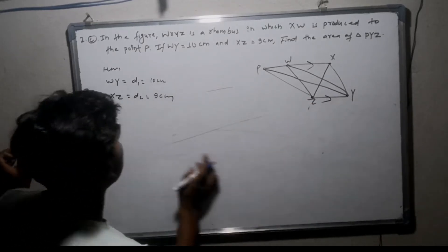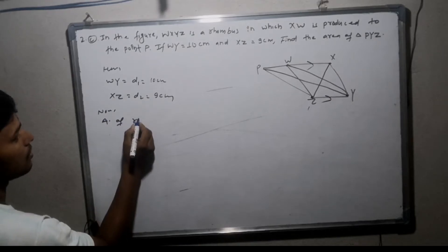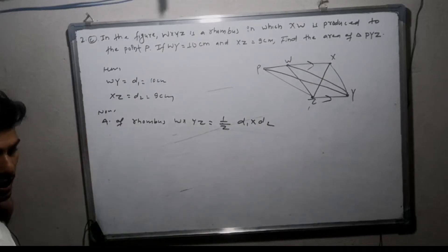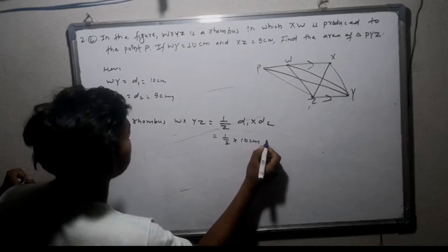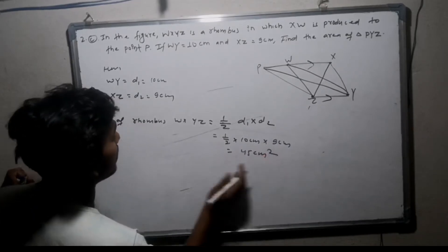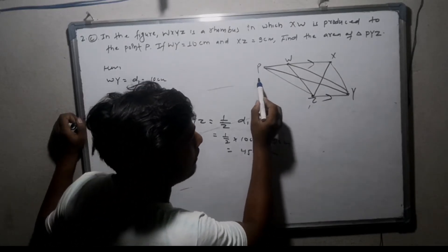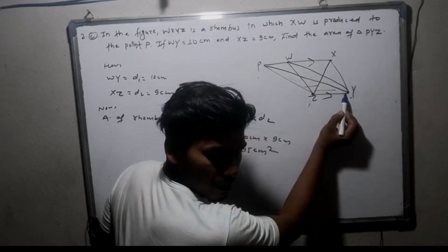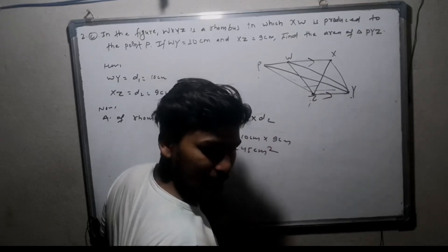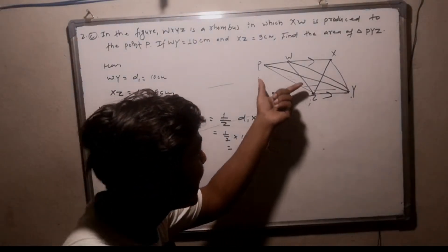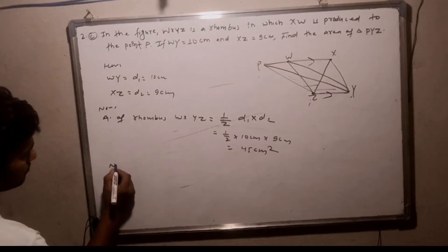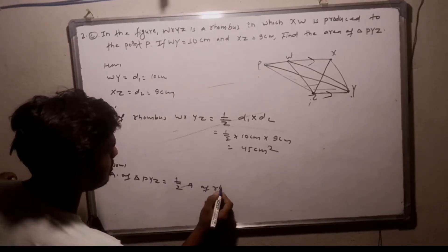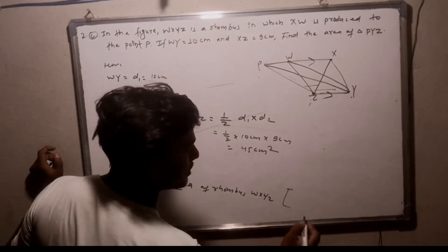The rhombus is WXYZ. It is called D1 into D2 formula — the area of rhombus. The triangle is from rhombus. Now it's parallel. The triangle is the same base, and the same parallel here. The triangle is half of the area of rhombus. The triangle is 1 by 2 area of rhombus WXYZ. Both are standing on the same base.